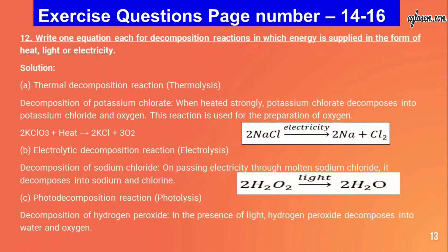Question number twelve: write an equation for decomposition reactions where energy is supplied as heat, light, or electricity. A - thermal decomposition: potassium chlorate when heated strongly decomposes into potassium chloride and oxygen: 2KClO₃ + heat → 2KCl + 3O₂. B - electrolytic decomposition: electrolysis of molten sodium chloride decomposes into sodium and chlorine. C - photo decomposition (photolysis): hydrogen peroxide in the presence of light decomposes into water and oxygen.